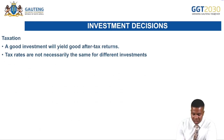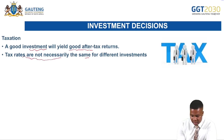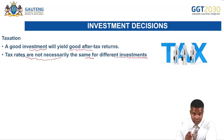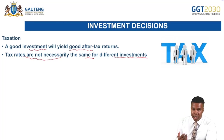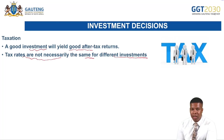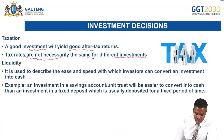The fifth factor is taxation. Some investments have tax implications, so a good investment should yield a good after-tax return. Tax rates are not necessarily the same for different investments. Before you invest, consider the tax percentages — for example, one investment may require paying 25 percent tax while another may require zero percent. Consider these factors before committing to an investment.